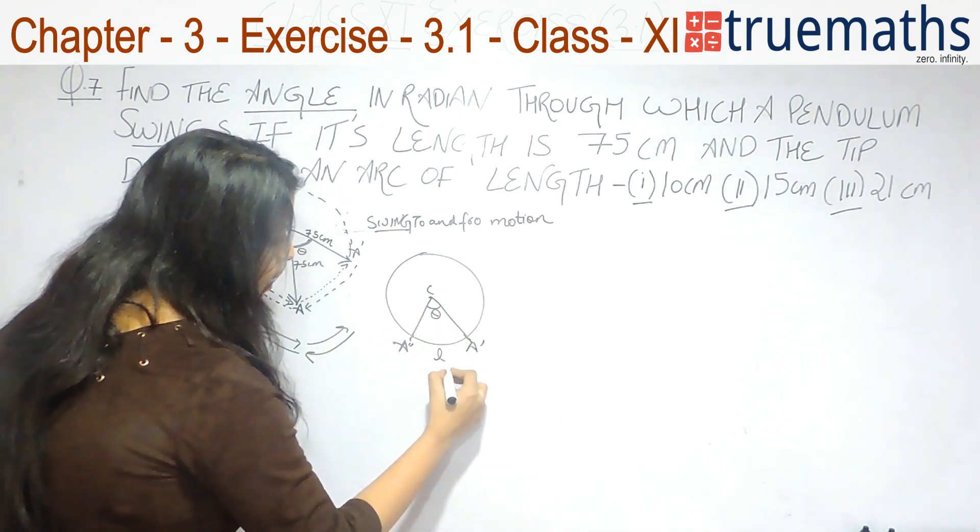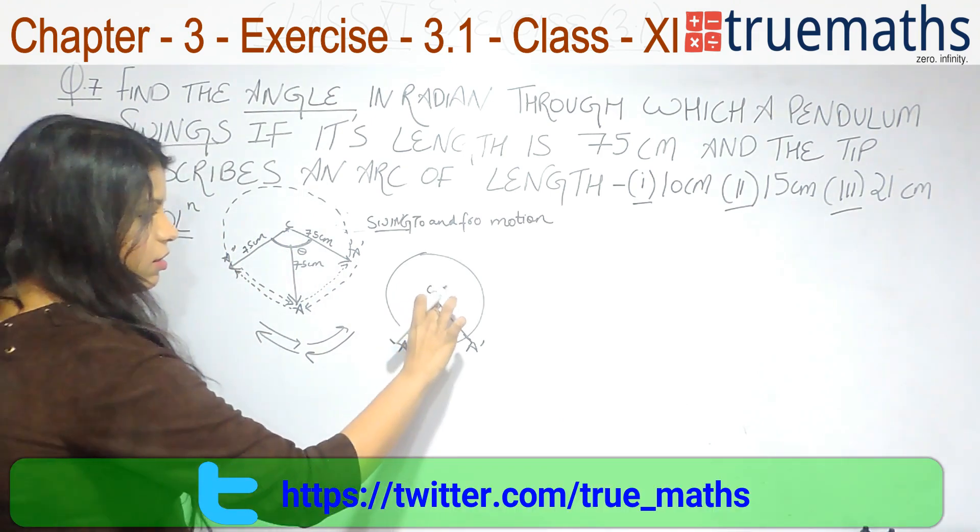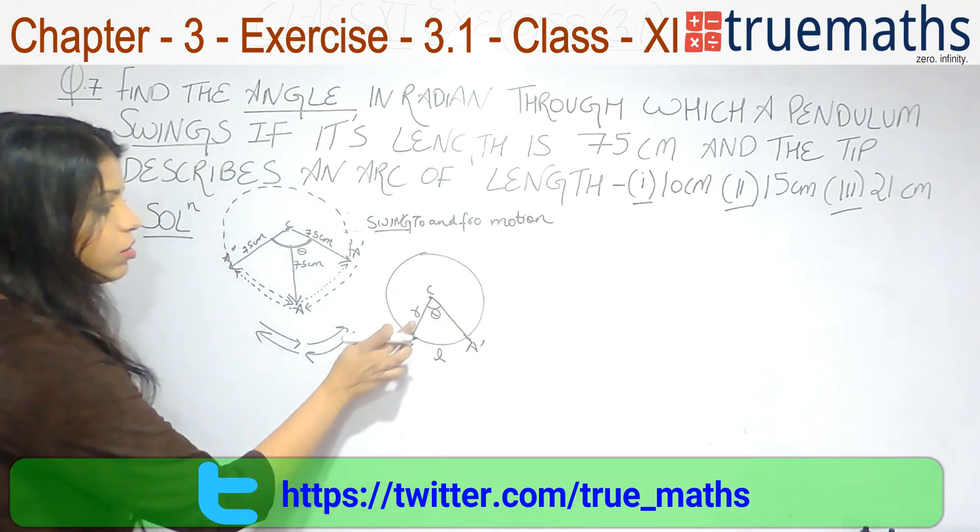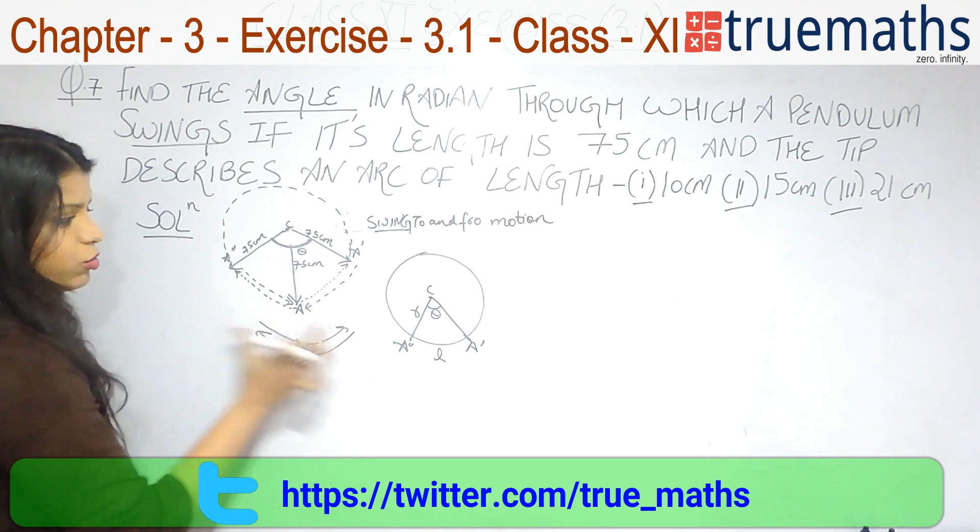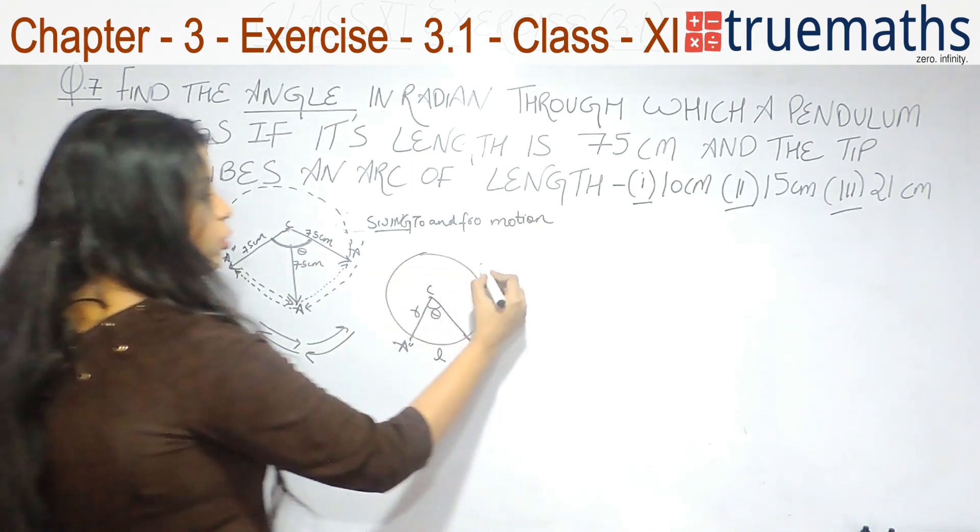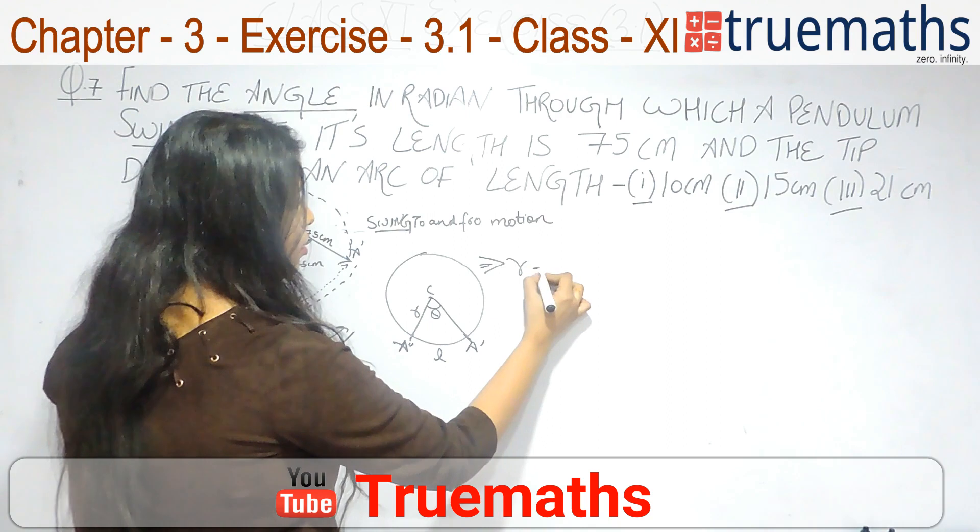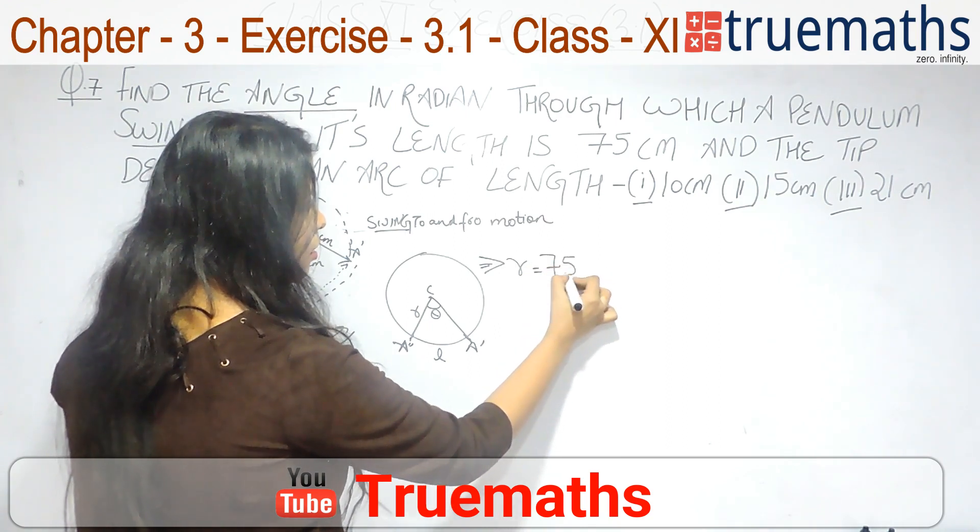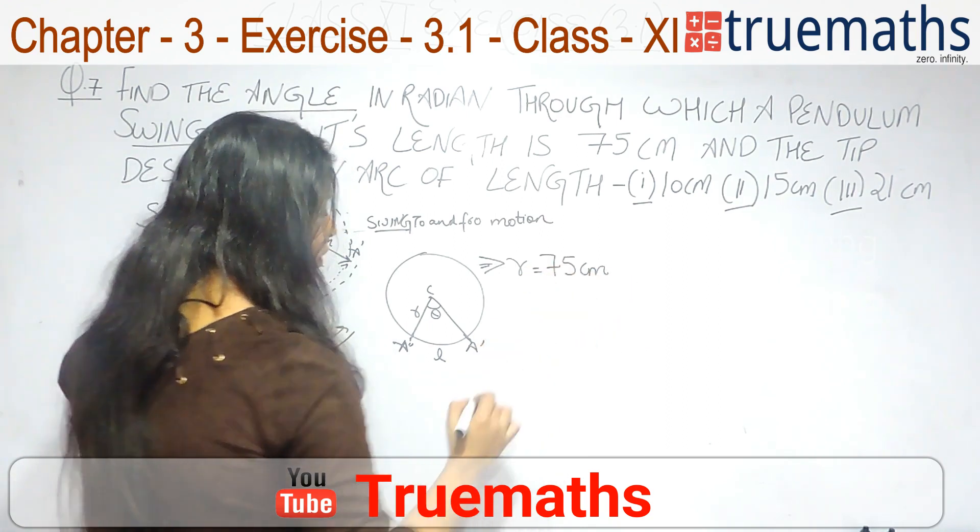And suppose this arc length is L. This is your radius. So in this, if you compare these two figures, what you will conclude is that this R is 75 cm.